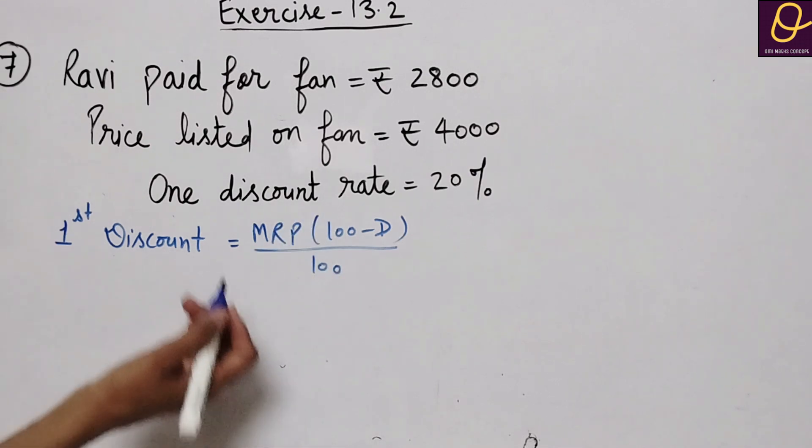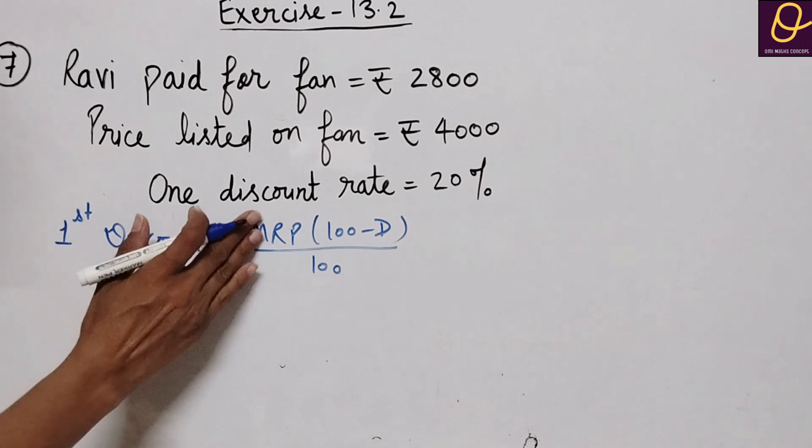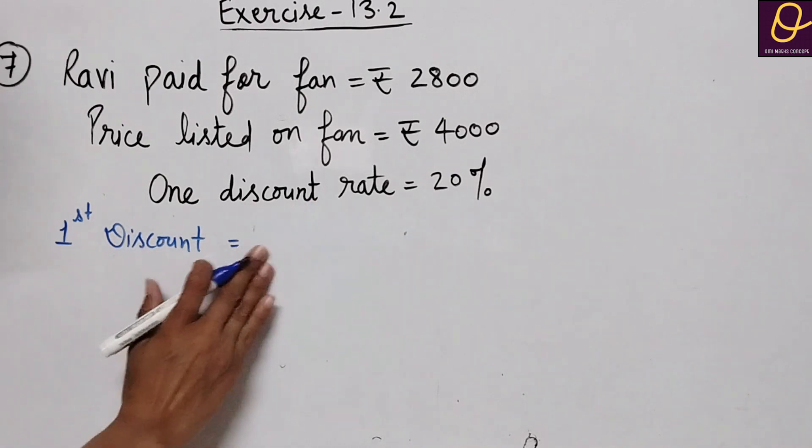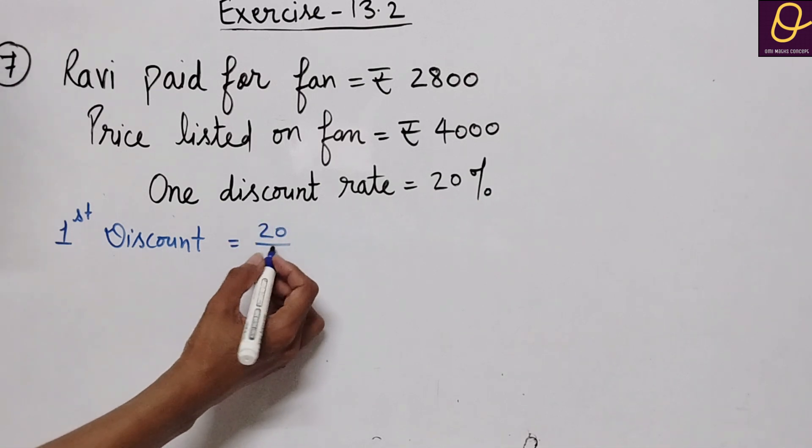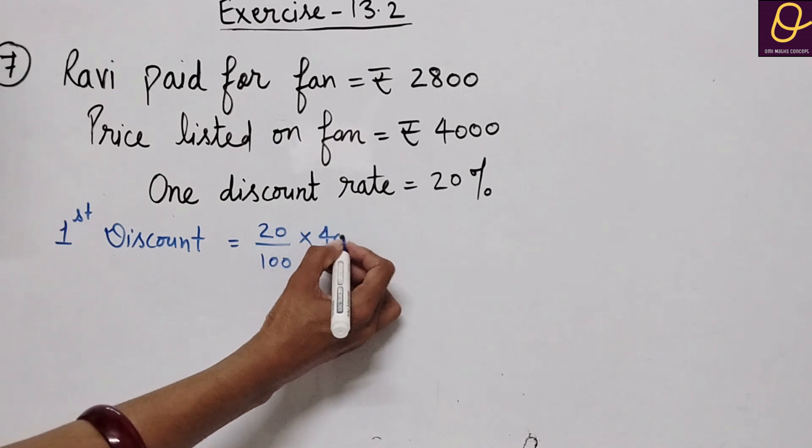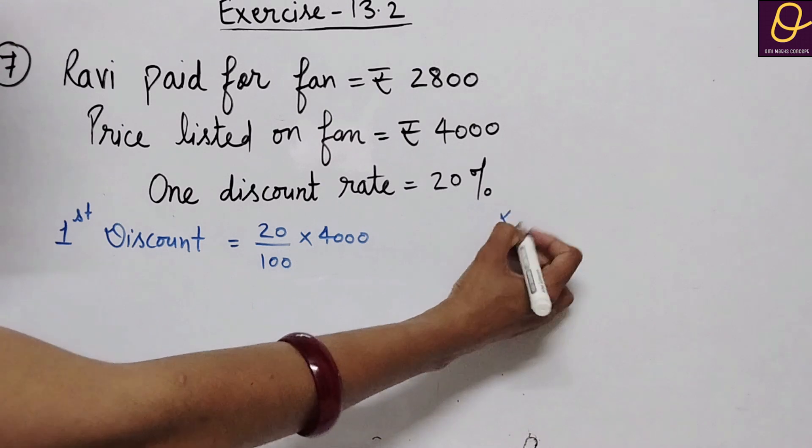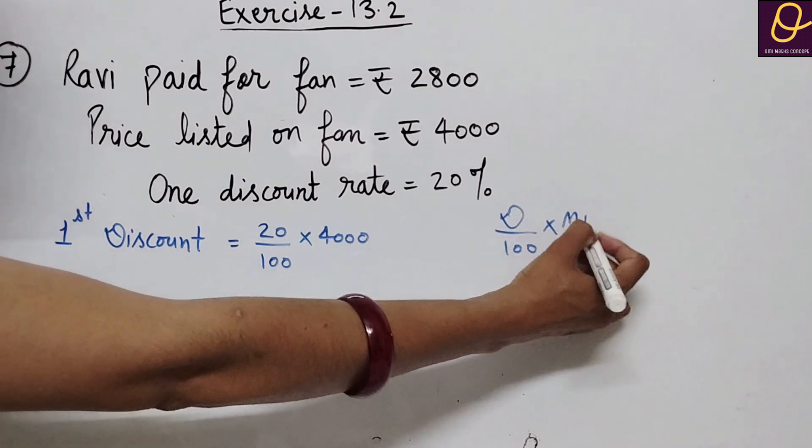To find the discount, we will do 20% of MRP. We will do 20 divided by 100 into 4000.